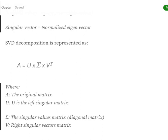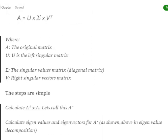SVD decomposition is represented as A equals U cross Sigma cross V-transpose, where U is the left singular matrix, Sigma is the singular value matrix which is a diagonal matrix — meaning only diagonal values are present and the rest are zero. The singular values we calculate for a matrix are placed on the diagonal, and V is the right singular vectors matrix.